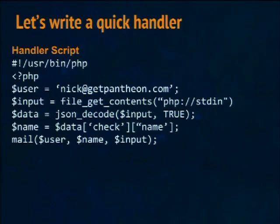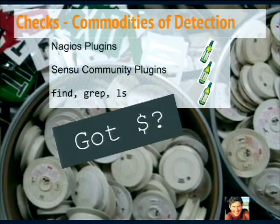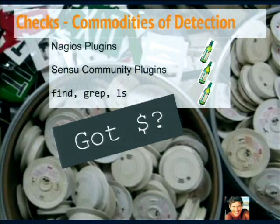The configuration is done in JSON and you can stick in anything you want. For example, the 'playbook' attribute is not really part of Sensu at all, but something we put in every check. That playbook is a URL of a wiki page that describes how to resolve, look into, or debug that particular check — a step we've made to make the alert actionable. I think of checks as commodities of detection — Sensu is totally compatible with all existing Nagios plugins that are battle-tested and have been in use for years, plus there are lots of Sensu community plugins.